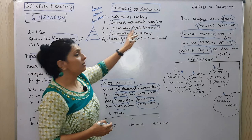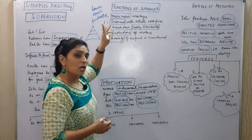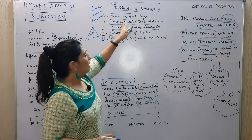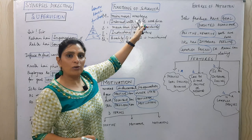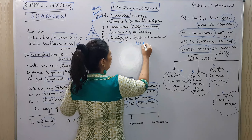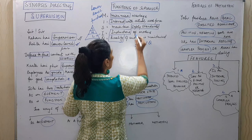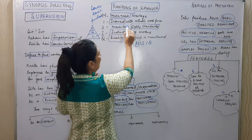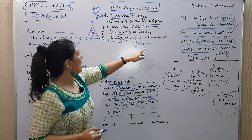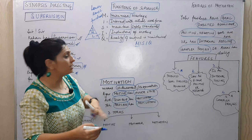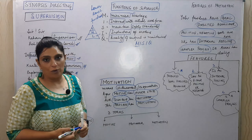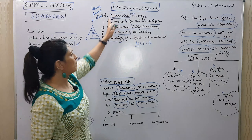We come to the functions of the supervisor. These are the same as lower-level management functions from the first chapter: top, middle, and lower level. We use the acronym MISS IQ: M is for Minimize wastage, I is for Interact with actual workforce, S is for maintain Safety standards, I is for Instruction of workers, and Q is for Quality of output is maintained. These are the functions of supervisor — simple MISS IQ.